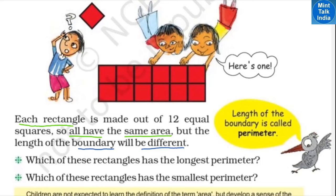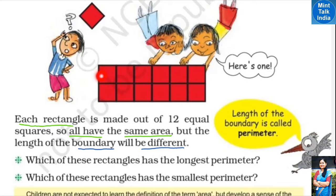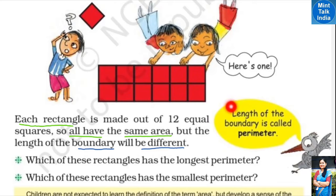Now let's go back to our chapter. We said that all rectangles are made from 12 equal squares, so the area is the same for all of them. Whether we arrange 12 squares side by side in a long row or in a shorter wider arrangement, they all occupy the same space. So the area is the same. But the length of the boundary — meaning the perimeter — is different.